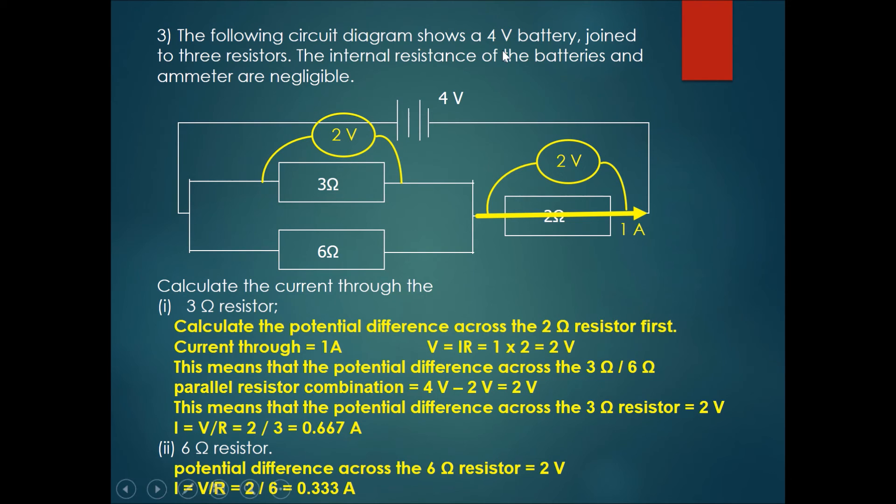So now we have the potential difference across a 3 ohm resistor, 2 volts and 3 ohms. So we can find the current going through. Current I equals V over R equals 2 over 3, giving you 0.667 amperes.